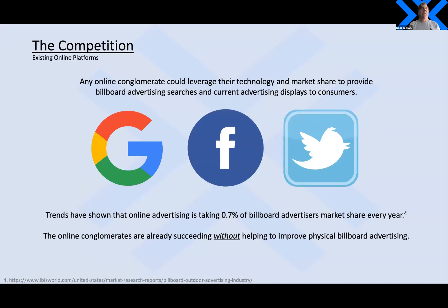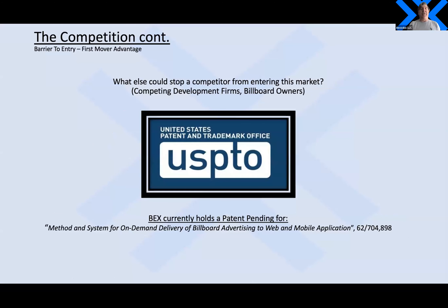We've been asked on multiple occasions about online advertisers — what about Google or Twitter, why couldn't they just leverage their platform and take over? Frankly, they don't have to. They're already taking 0.7% of billboard advertisers' market share every year, so they don't need to do anything to improve physical billboard advertising. We have a first-mover advantage — there's nobody out there doing this digital divide bridging — and we also have a barrier to entry. We currently have a patent pending for our method and system for on-demand delivery of billboard advertising to web and mobile application.